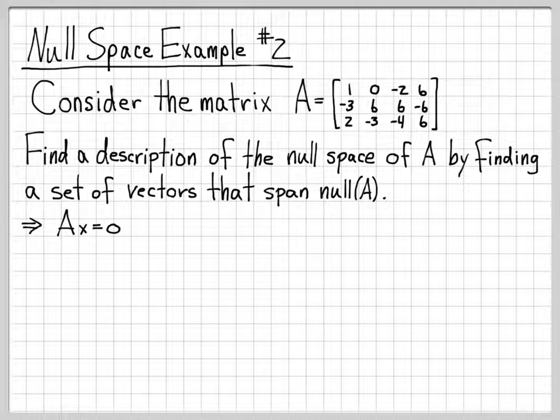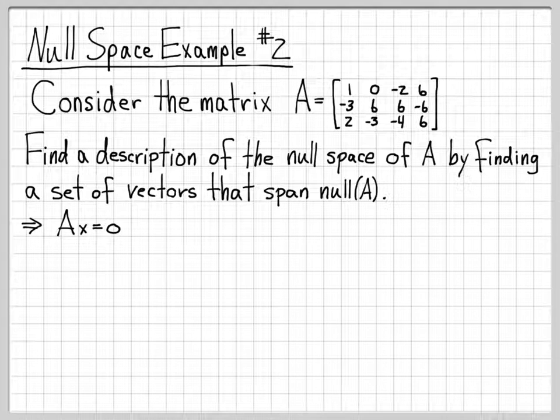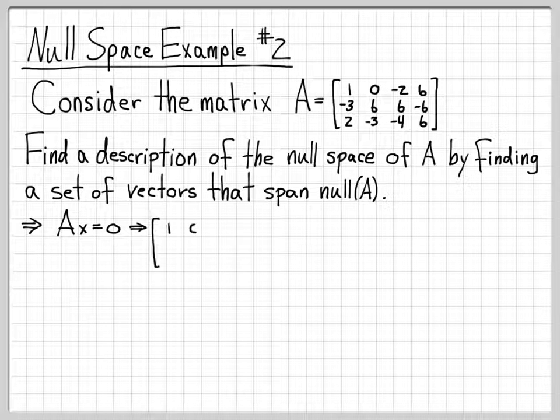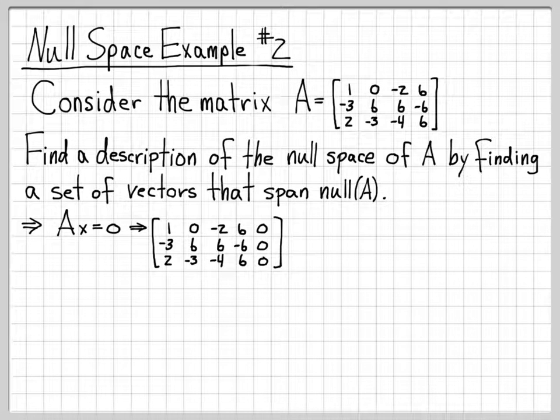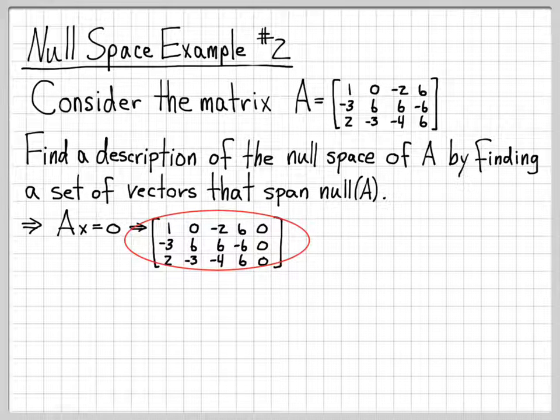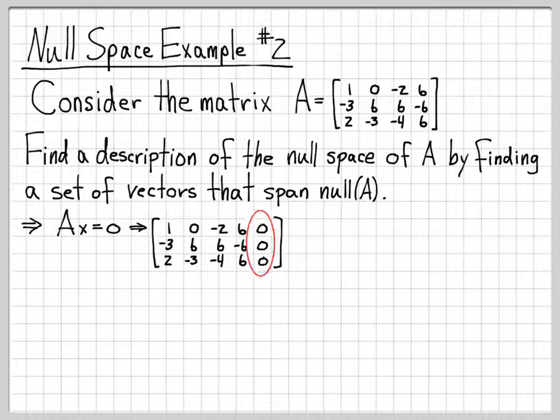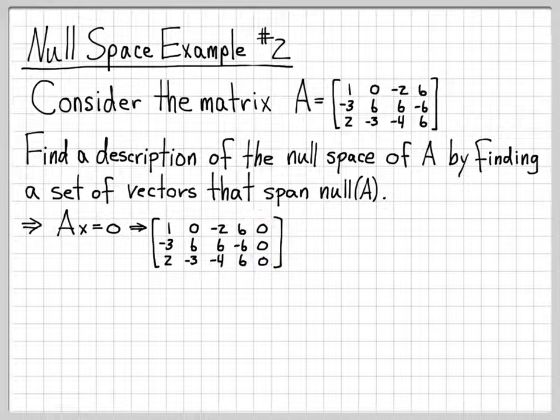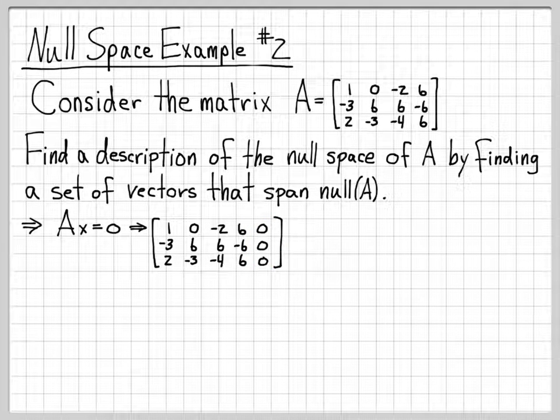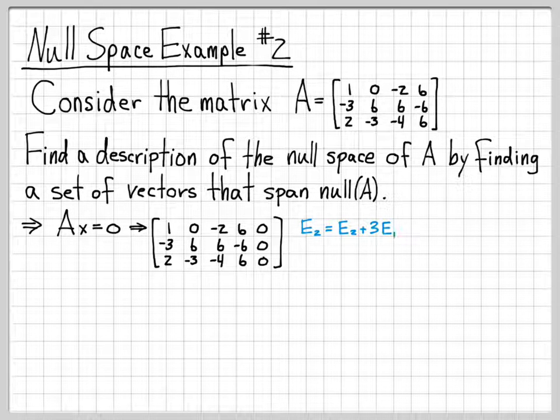So remember what the null space means. I'm trying to find the set of vectors such that AX equals 0. So that's what I need to find. I need to find all the vectors X that satisfy this equation. So what I can do is I can just go ahead and set up an augmented matrix. So there's my matrix A, and I've augmented it with the vector 0, 0, 0, because I'm trying to find all solutions of this system of equations.